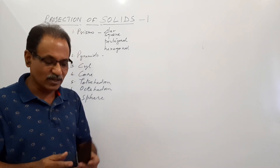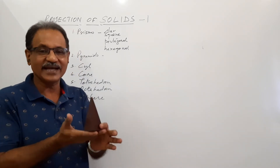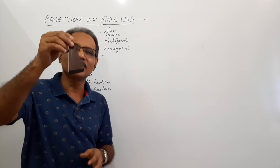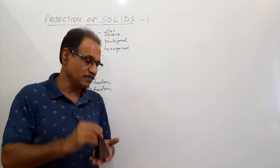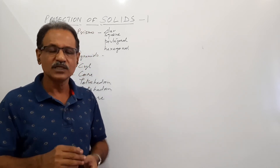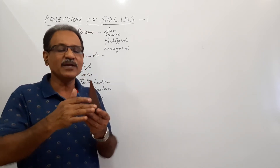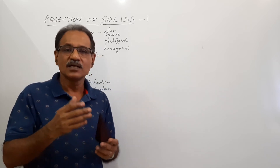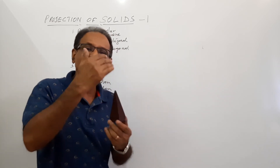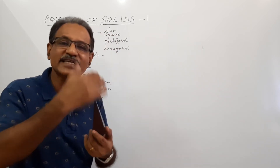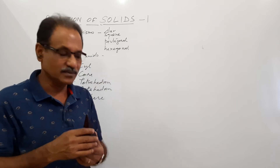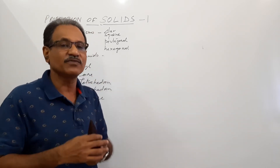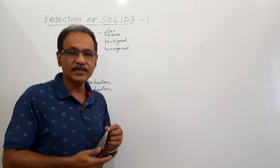Unfortunately, I don't have the model of a pentagonal pyramid, triangular pyramid, and hexagonal pyramid — only one pyramid is available, but you can visualize them. For a pentagonal pyramid there will be 5 isosceles triangular faces. For a hexagonal pyramid, 6 isosceles triangular faces. For a triangular pyramid, 3 isosceles triangular faces.